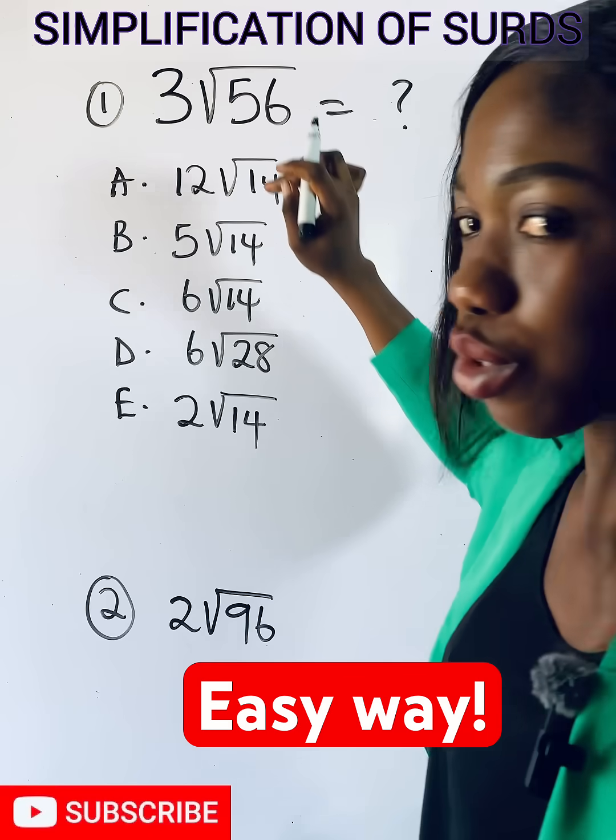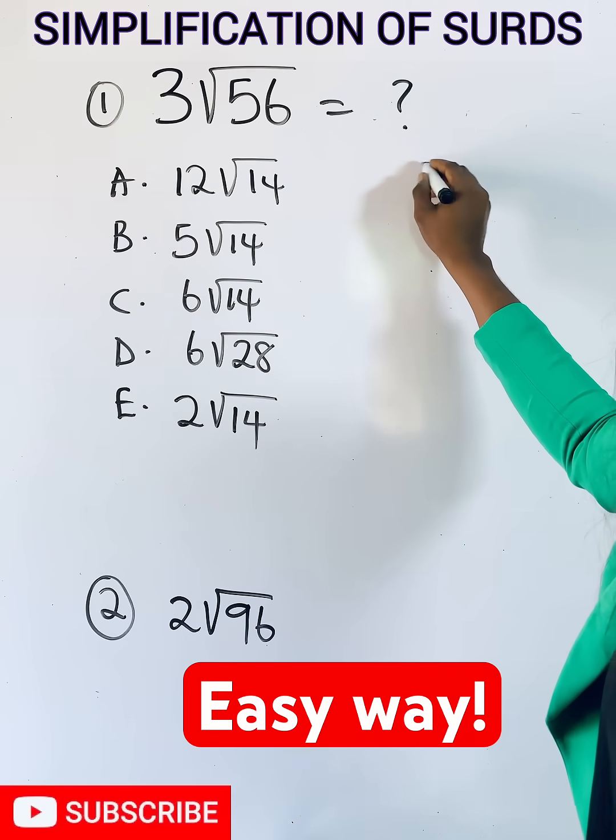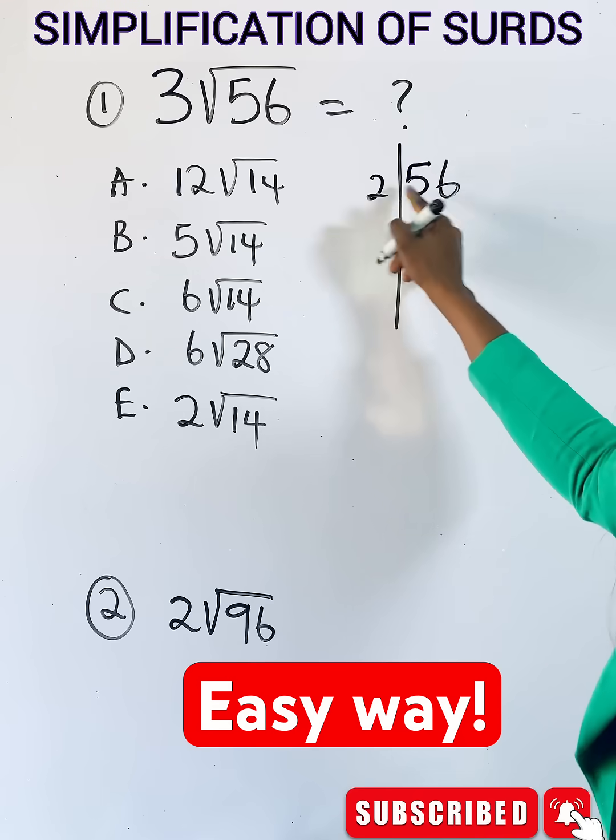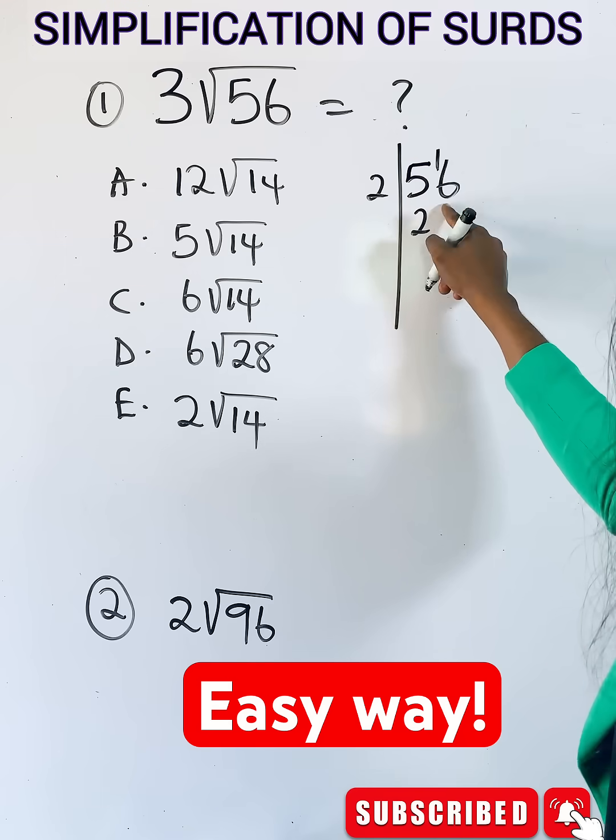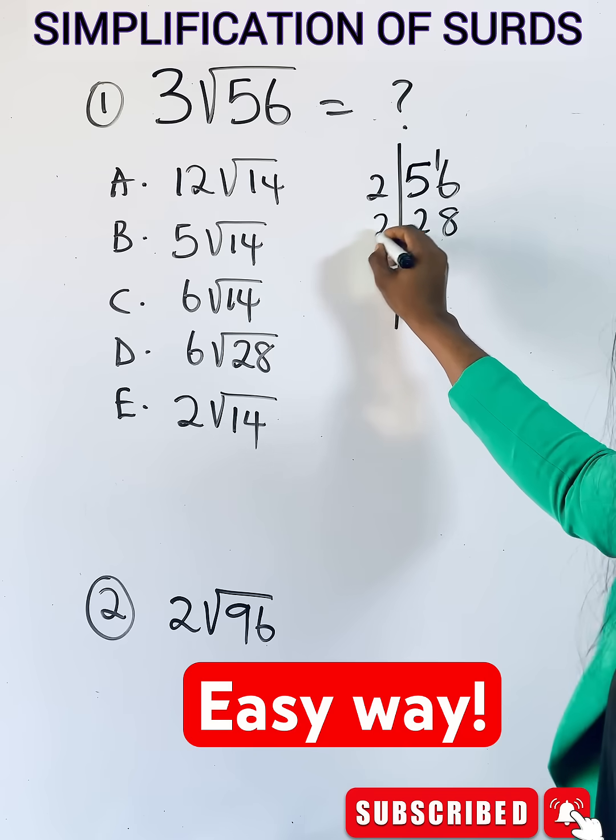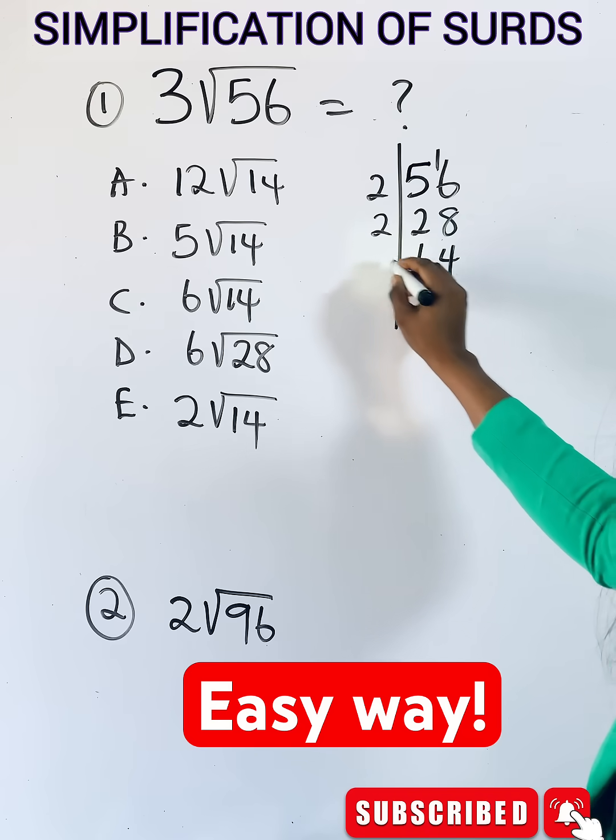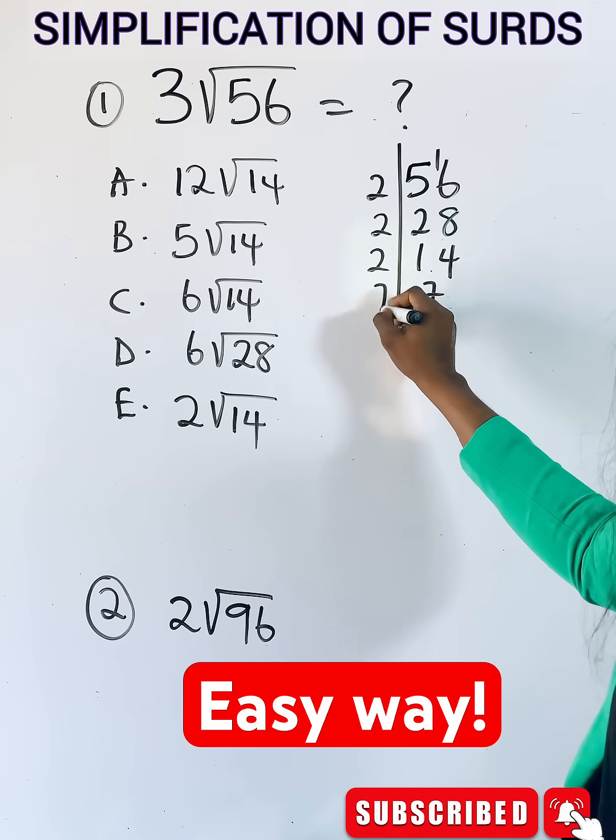So let's reduce it. We have 56, what can divide? 2 here is 2 remaining 1, 2 in 16 is 8, 2 can still go 1, 4, 2 here is 7, 7 is 1.